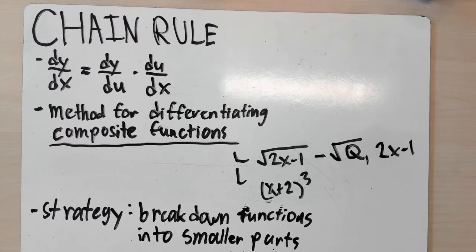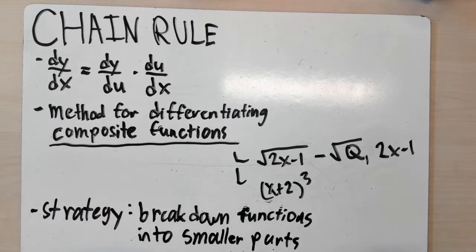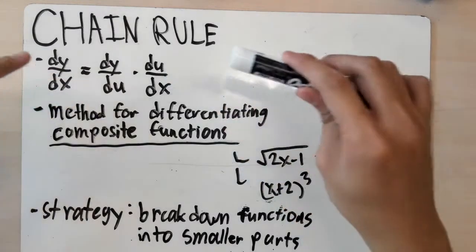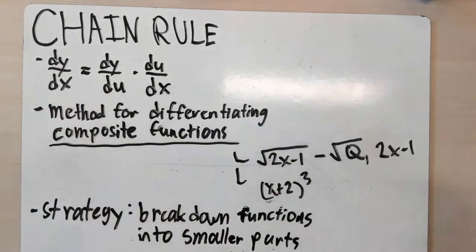What chain rule states is that dy/dx is equal to dy/du times du/dx. The strategy here is to look at a composite function, break it down into smaller parts or smaller functions, find the derivatives of those functions, and then find the product of those derivatives. This will be clearer with an example.